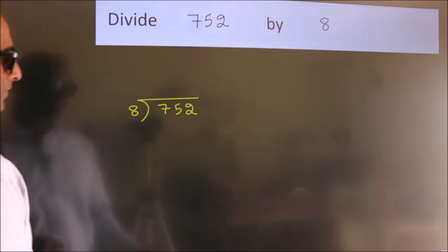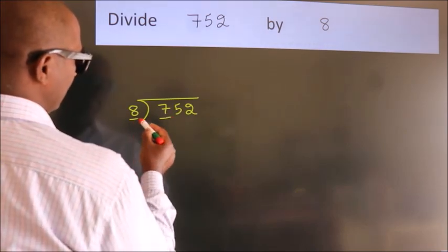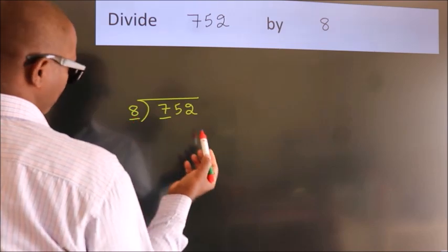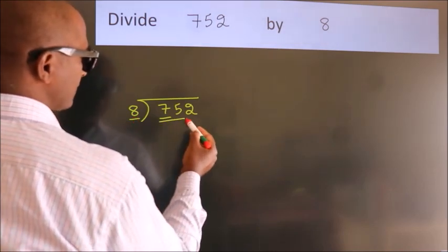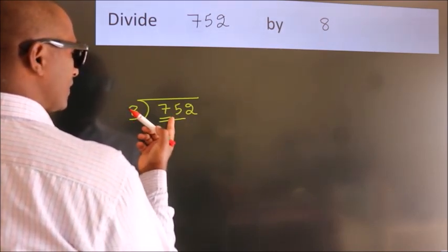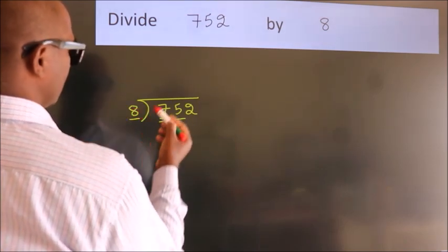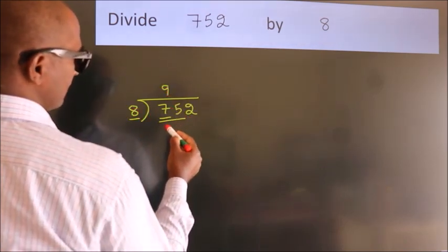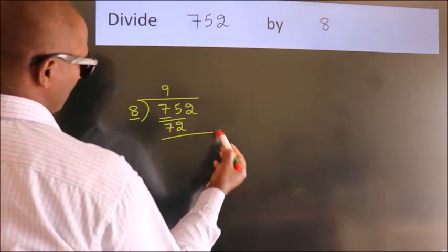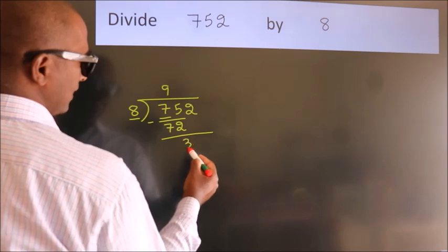Next, here we have 7, here 8. 7 is smaller than 8, so we should take two numbers: 75. A number close to 75 in the 8 times table is 8 nines, 72. Now we should subtract. We get 3.